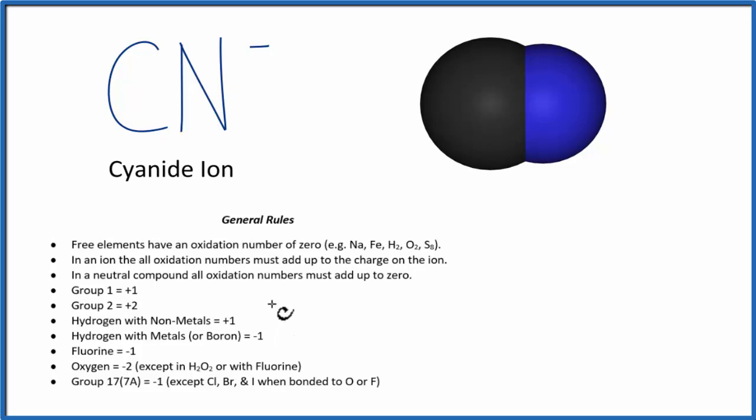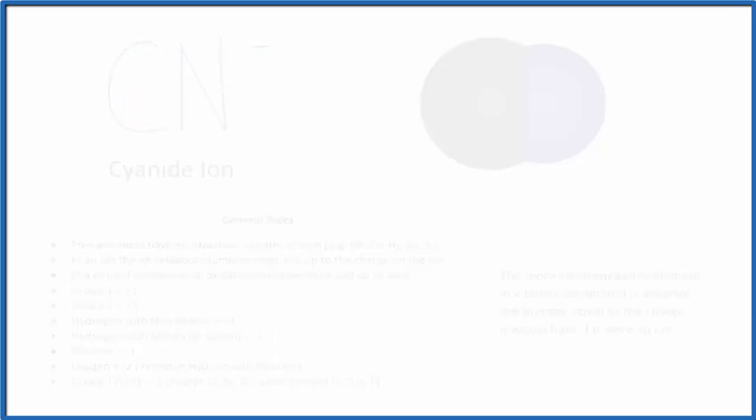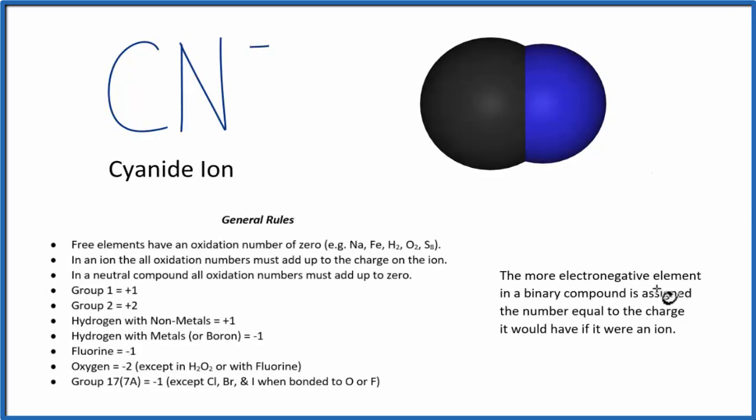There is another rule that we see sometimes that can help us here. It says that the more electronegative element in a binary compound, in a binary compound with just two things, gets the number equal to the charge it would have if it were just an ion.